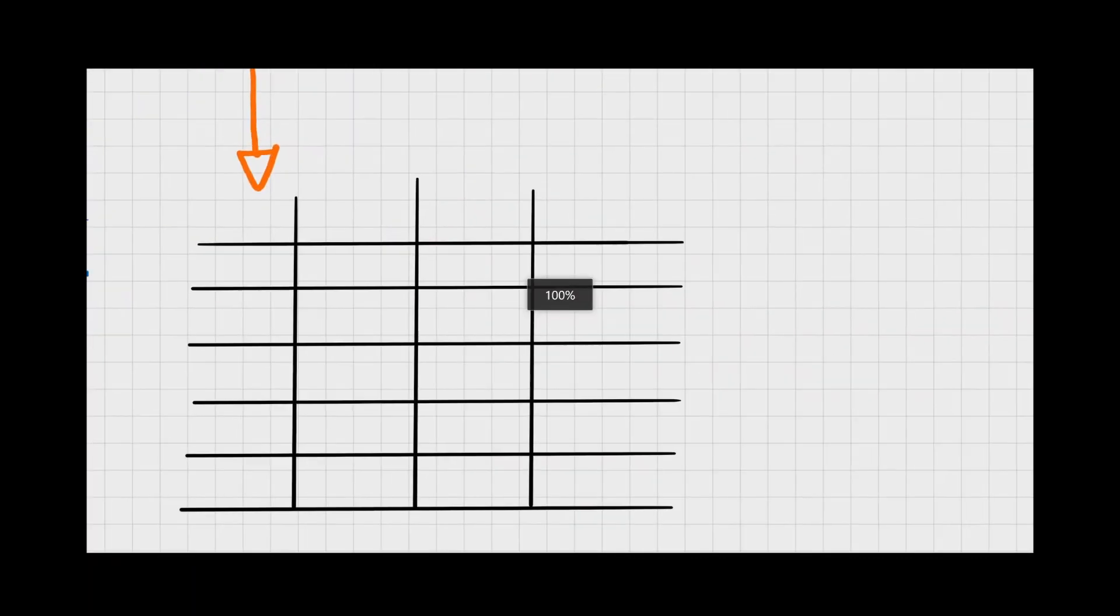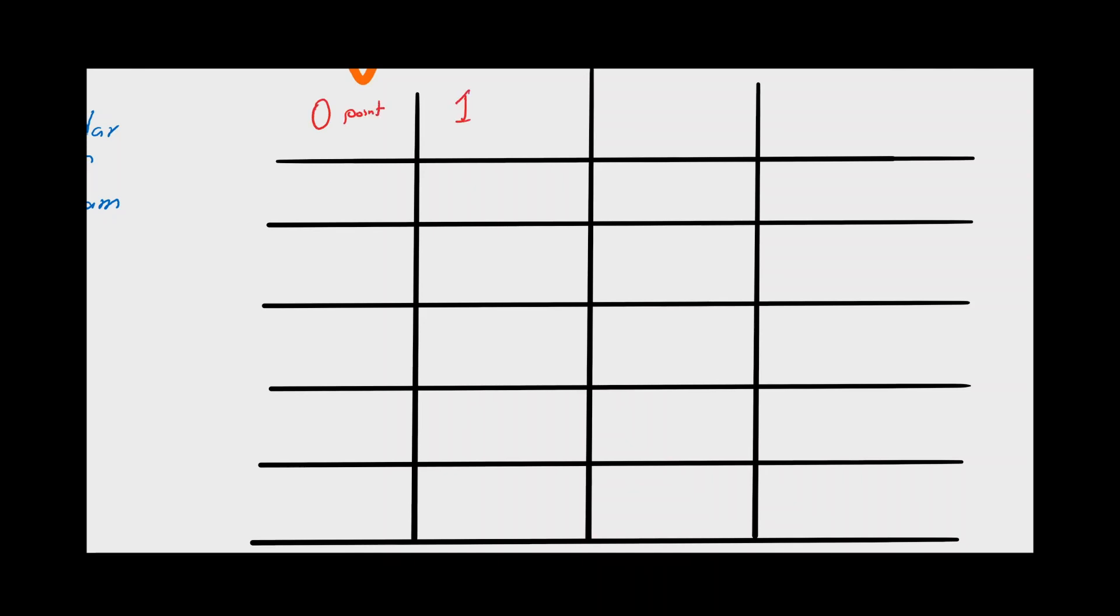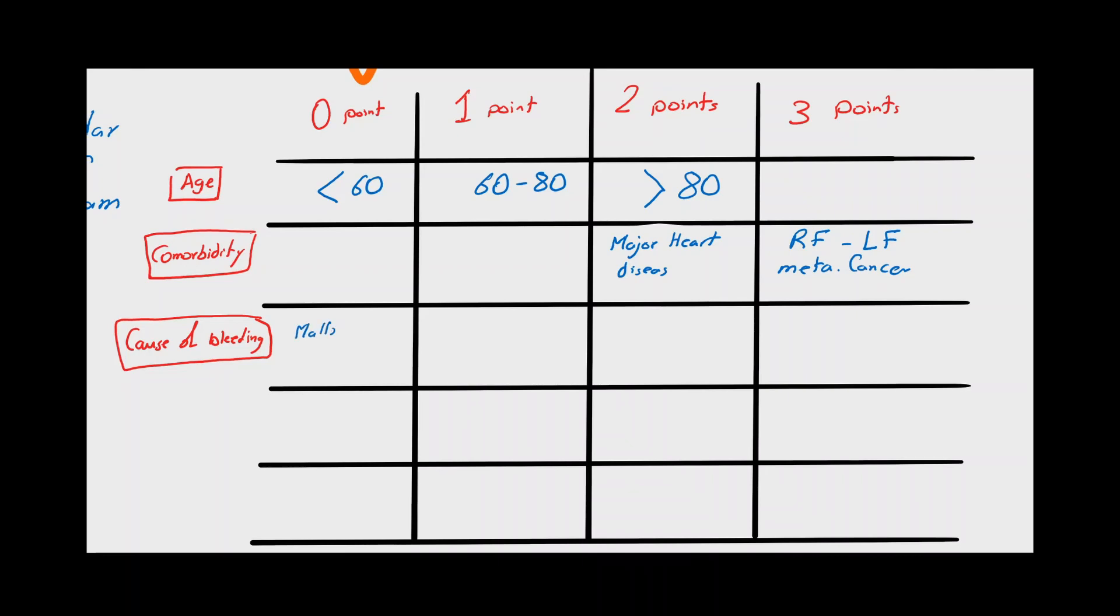One of the useful tools to estimate the risk of rebleeding is the Rockall score, in which each category is assigned a value from 0 to 3 points. Number one, the age of the patient at admission, in which the best prognosis is in patients before 60 years old. The second category is the presence of comorbidities, in which heart diseases are assigned 2 points. Renal failure, liver failure and metastatic cancer are assigned 3 points with the worst prognosis. The cause of the bleeding is the third category. The best prognosis is assigned to Mallory-Weiss syndrome with 0 points, followed by benign ulcers assigned 1 point, and malignant ulcers assigned 2 points with the worst prognosis.